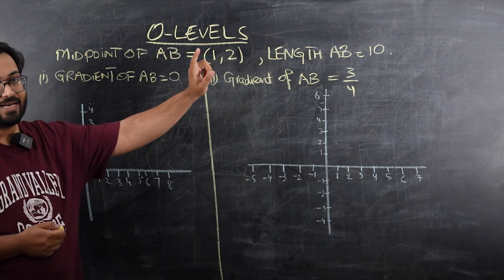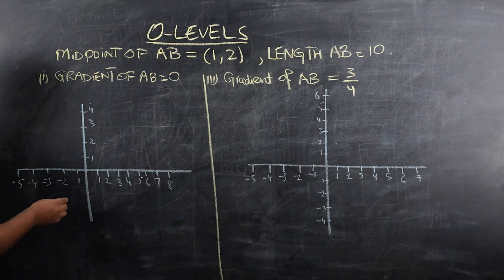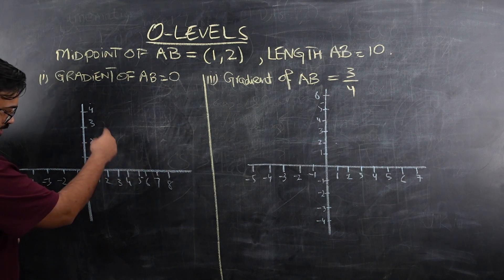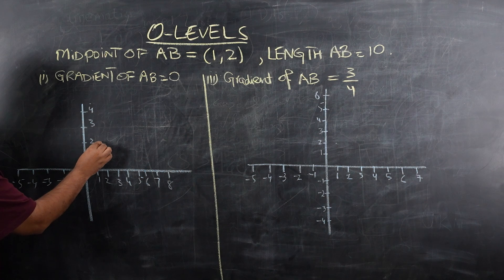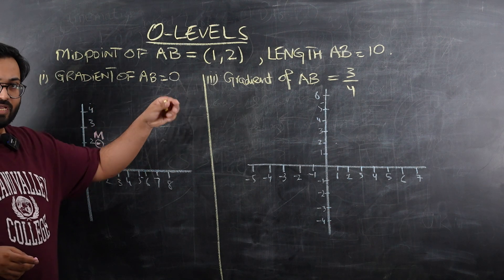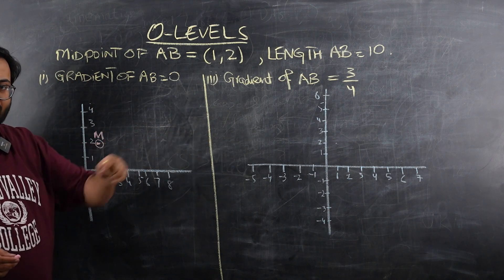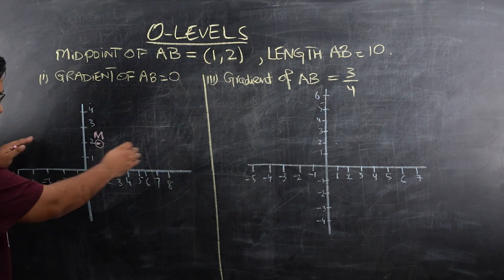Let's see. This is the setup of the question. We have the midpoint AB that is (1,2) and the length of line AB is 10. I've assumed this is a grid, so (1,2) would be over here. If the gradient of AB is 0, that means this line is going to be a horizontal line.